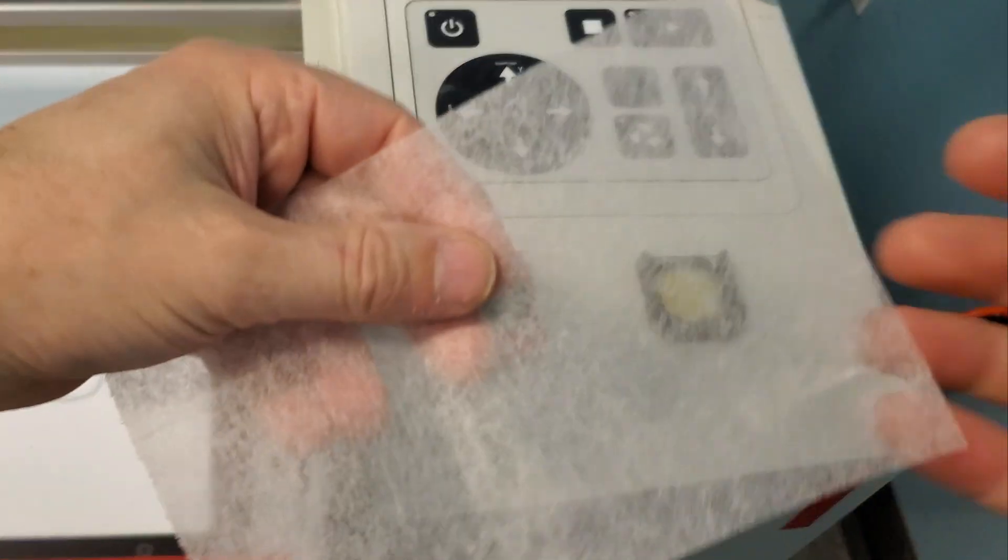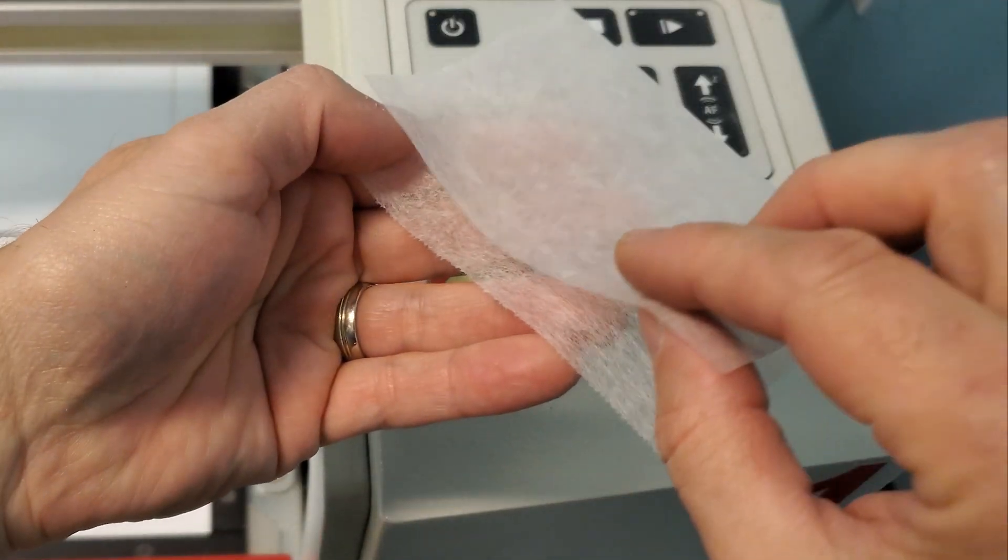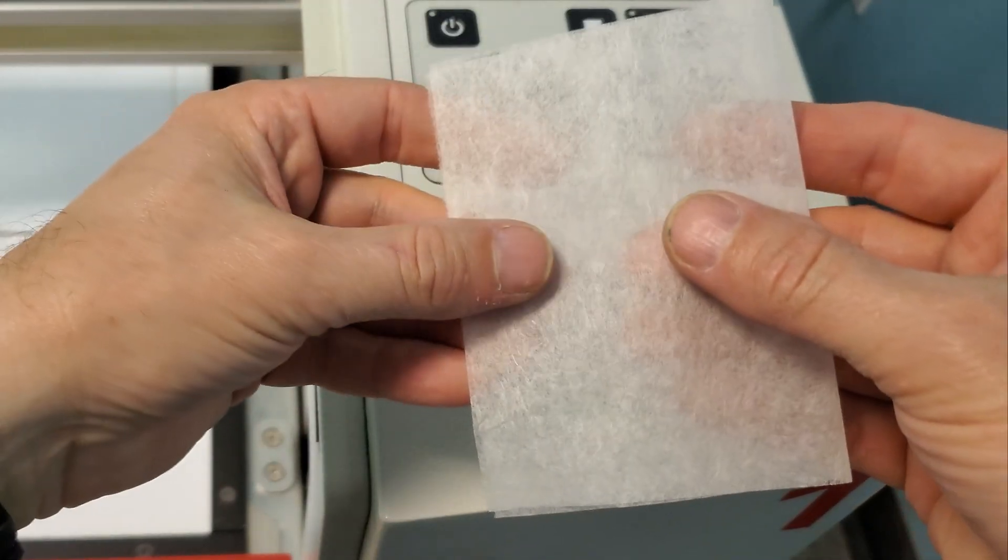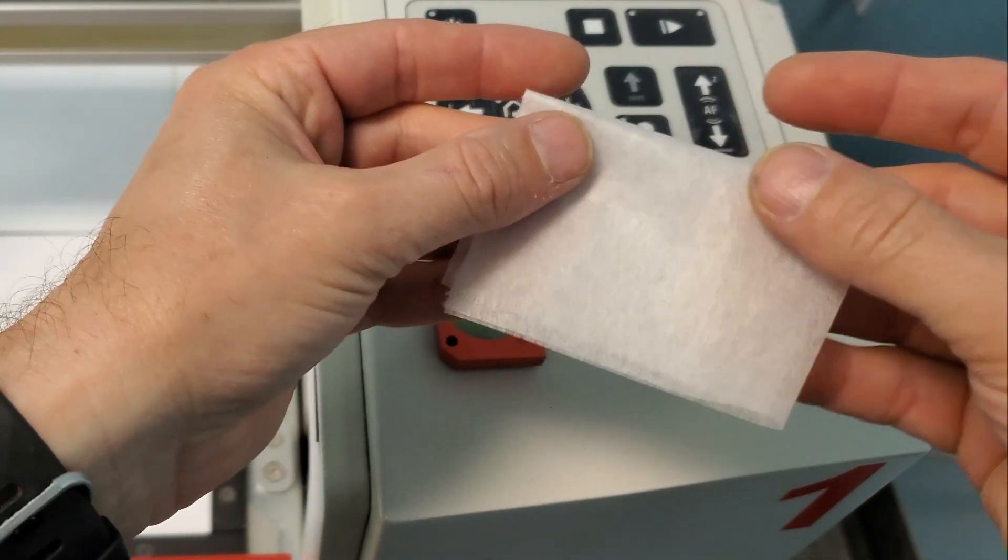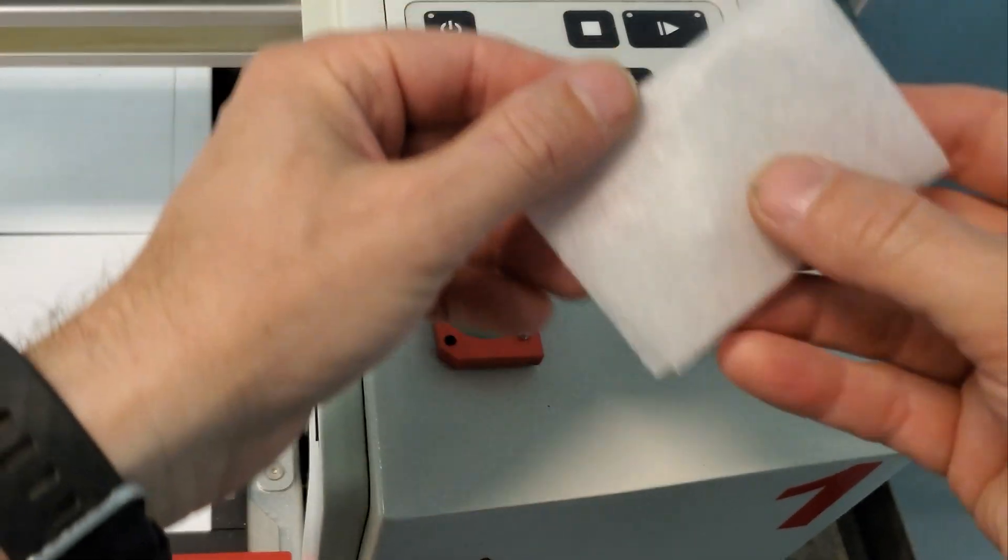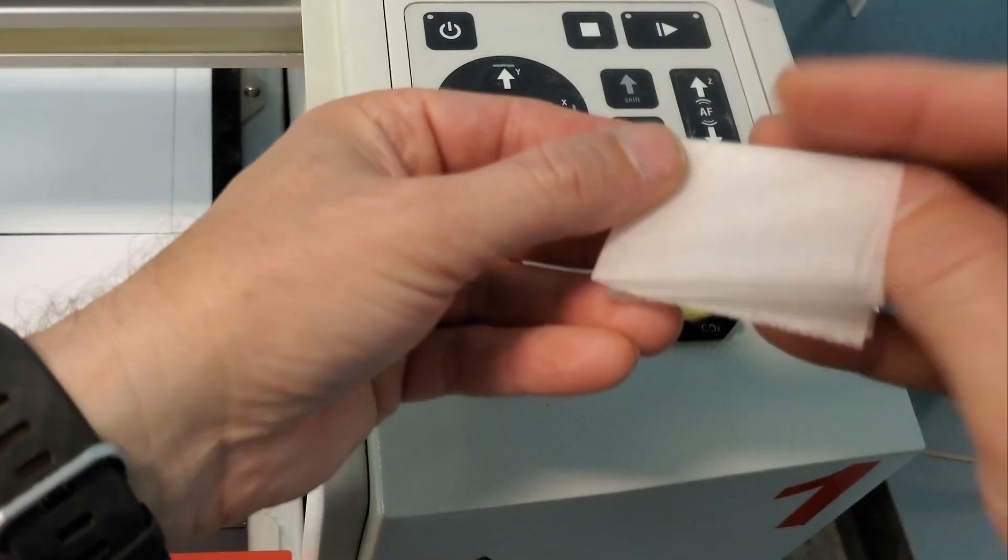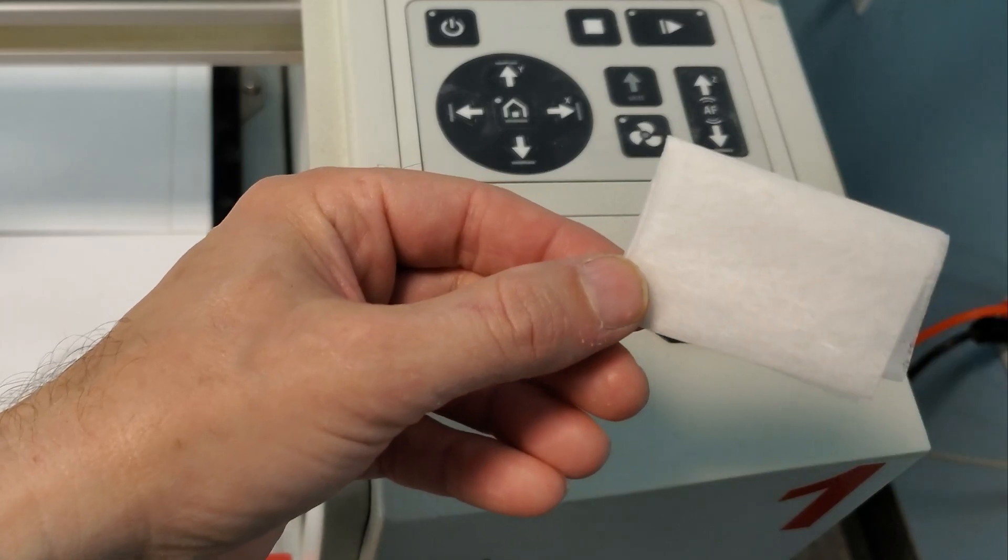I start with a new lens cleaning tissue. Always start with a new sheet, not the used one from your last cleaning. These are too cheap to not use a new one. Anyway, I loosely fold it up until I get a small puffy rectangle roughly about 1 by 2 inches in size.